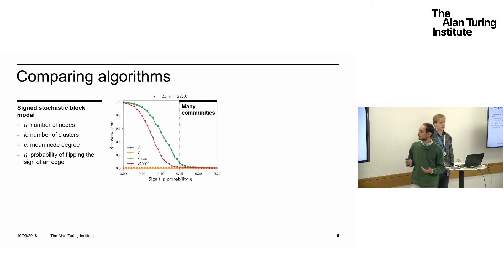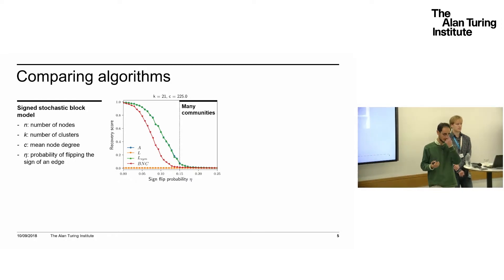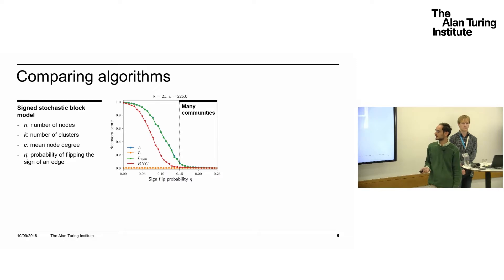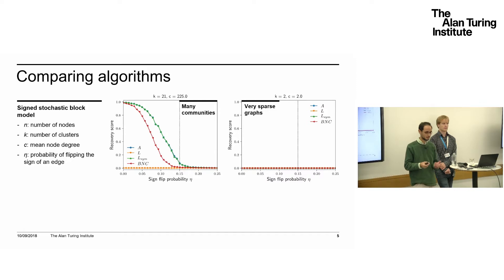If we plot the recovery score of standard clustering algorithms—like those based on the adjacency A, the Laplacian L, the symmetric Laplacian L-Sym, and B and C, the most famous spectral clustering algorithms for signed networks—with noise going to zero, you have perfect recovery. This scenario has many communities, K equals 21, and we found this particularly hard for standard spectral clustering. Also, the case where C is very low—very sparse graphs where every node is only connected to two other nodes in a network of 10,000 nodes—is quite challenging.